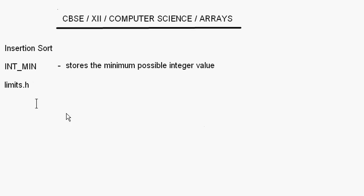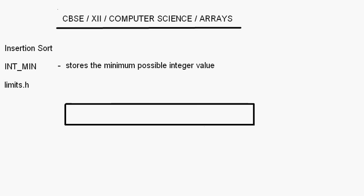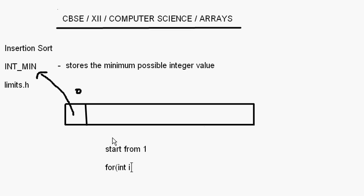We are going to use INT_MIN in insertion sort. Whatever the size of the array, the zeroth element is always reserved for INT_MIN. Array elements entered by the user will start from index 1. The for loop will always start from i equal to 1, i less than or equal to size.